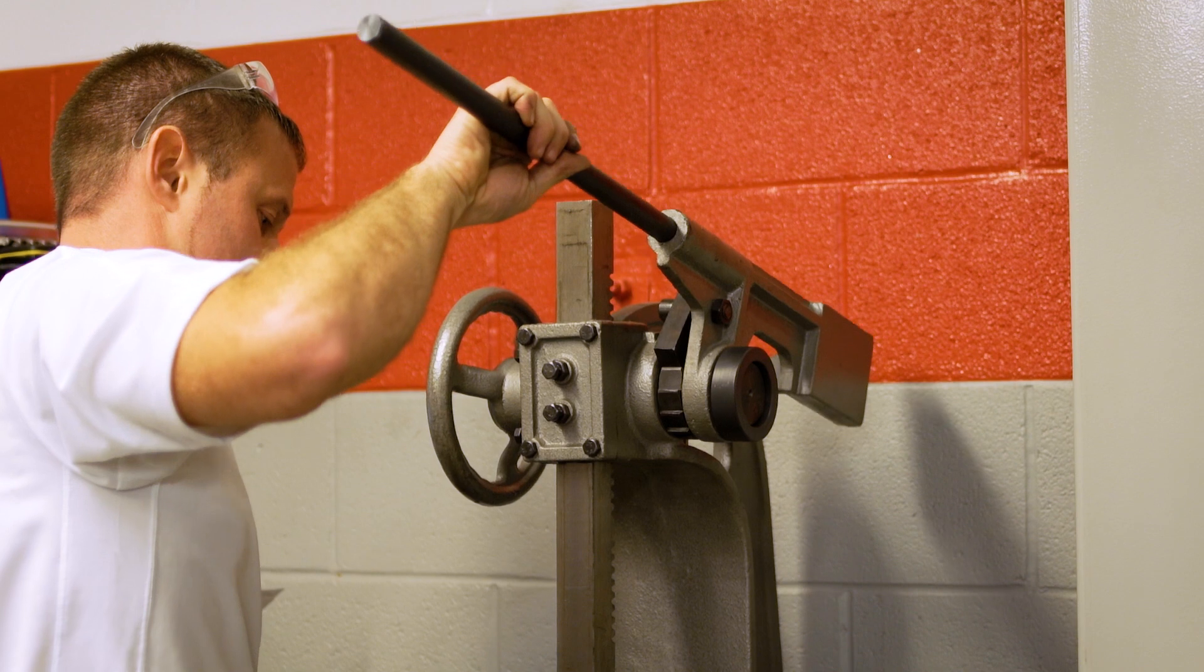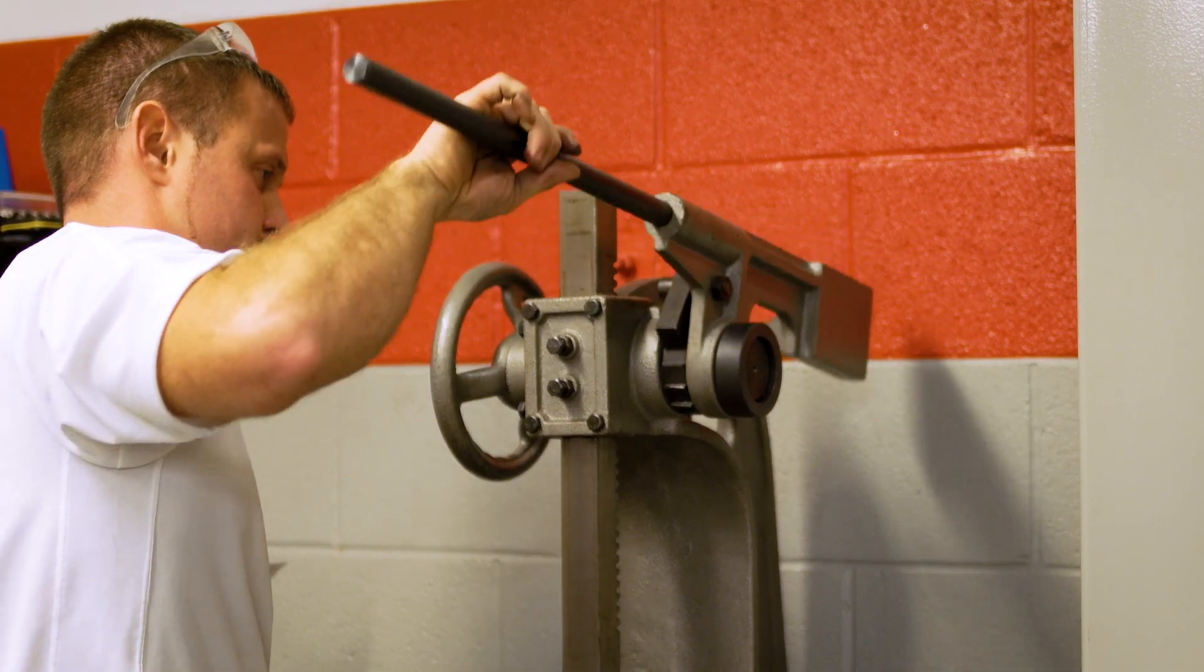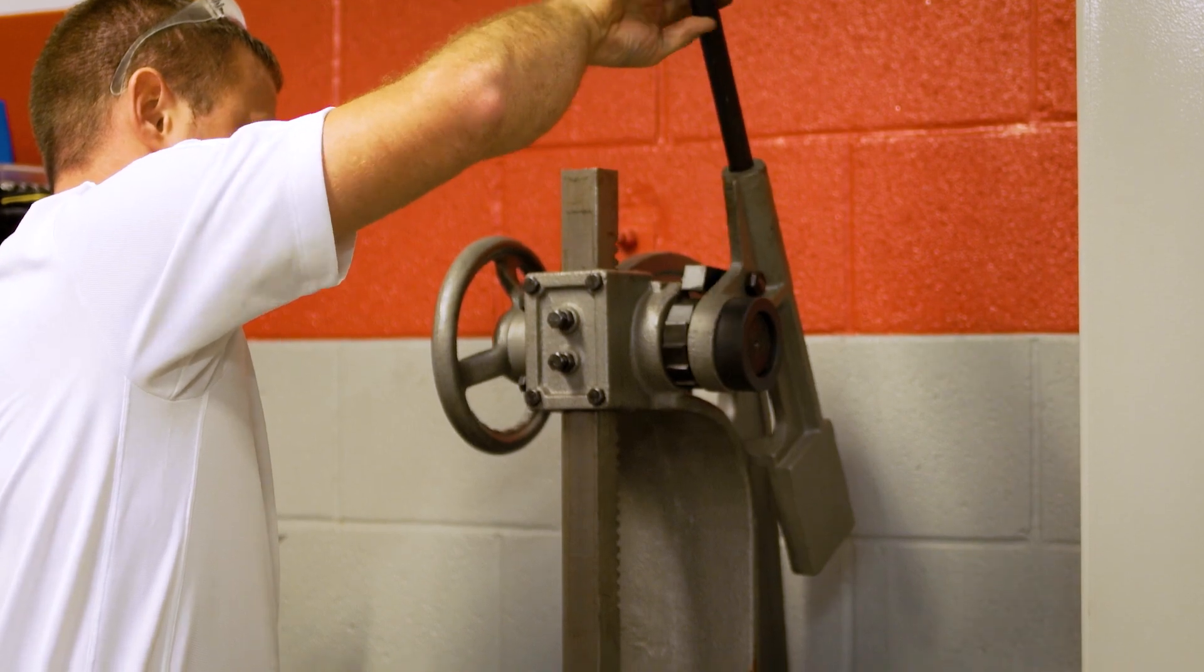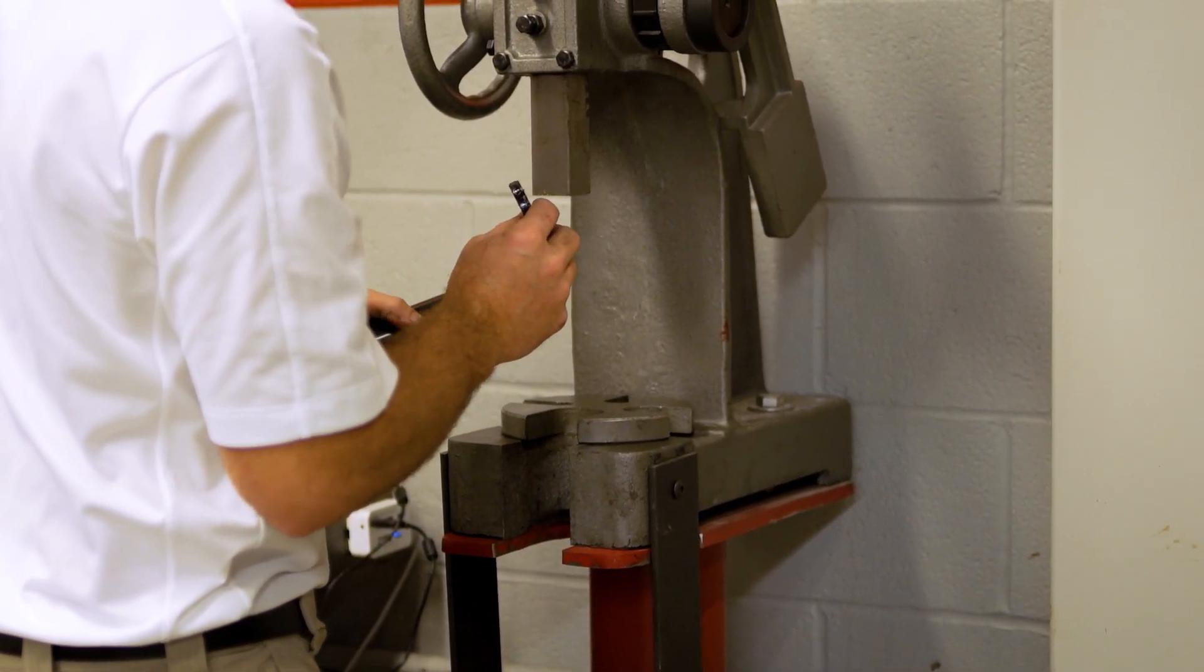If you haven't already, be sure to inspect your rack bar for rust pits and scratches. If any are present, you'll need to replace or refinish your rack bar. Just smoothing it out will not create a good seal, which will ruin your whole build.